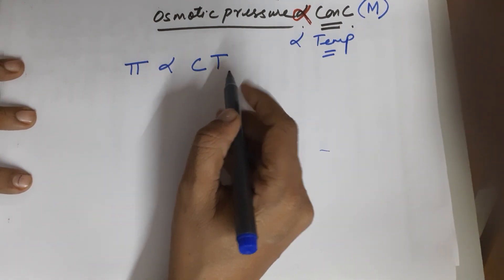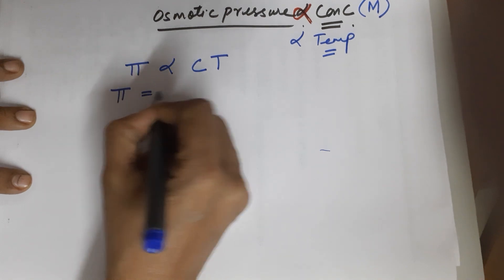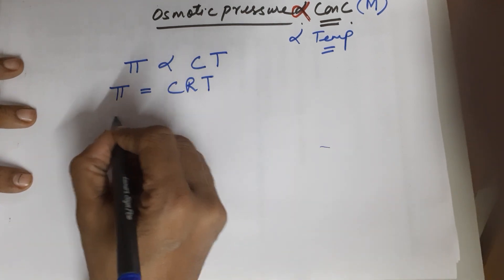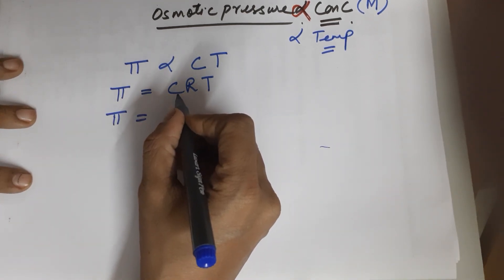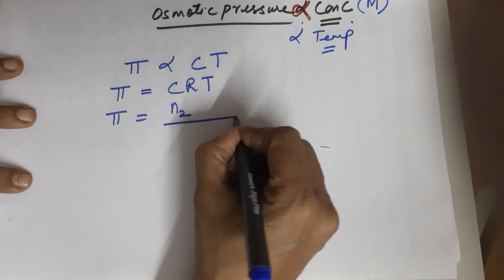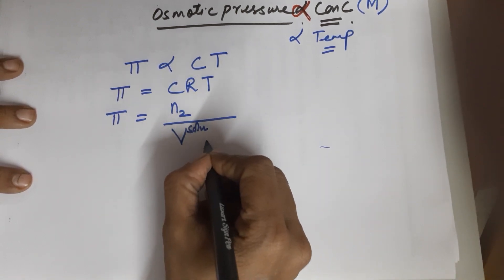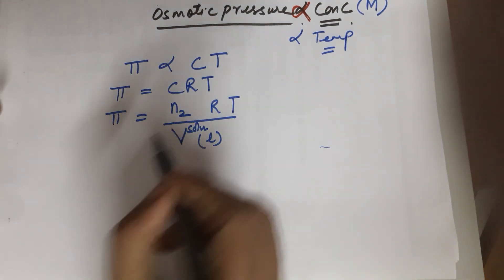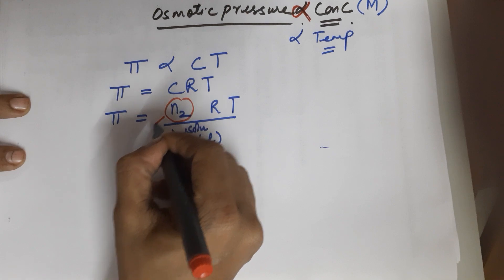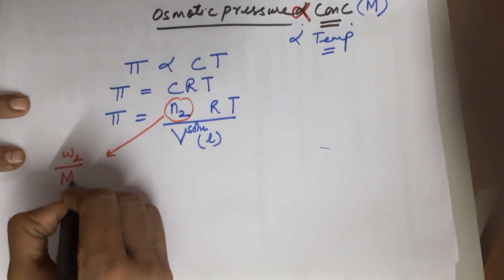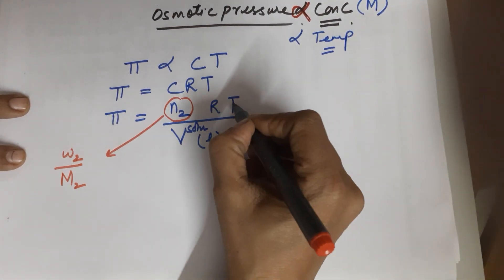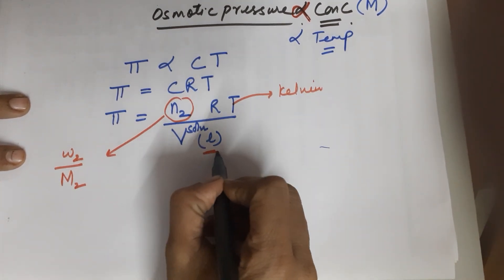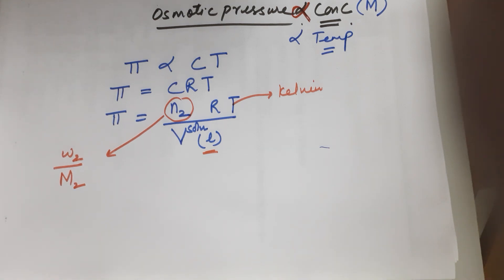So π is equal to C·T, and therefore π = CRT, where R is the universal gas constant. Opening up the concentration term — molarity = moles of solute divided by volume of solution in liters — and n₂ = weight of solute divided by molecular mass of solute. Temperature must always be taken in Kelvin.